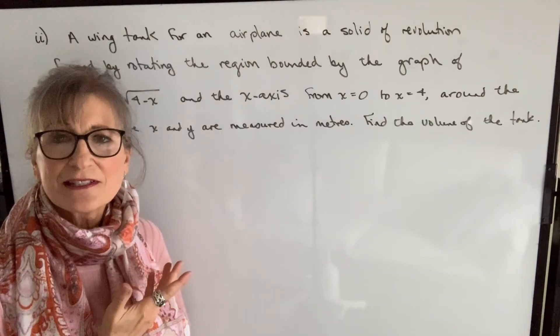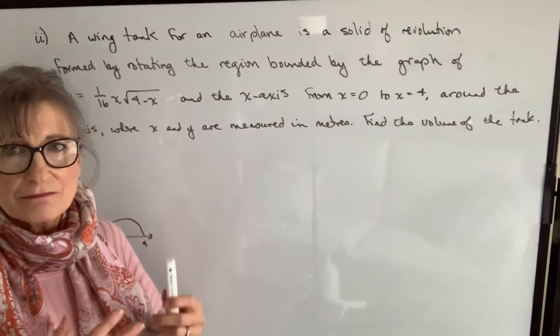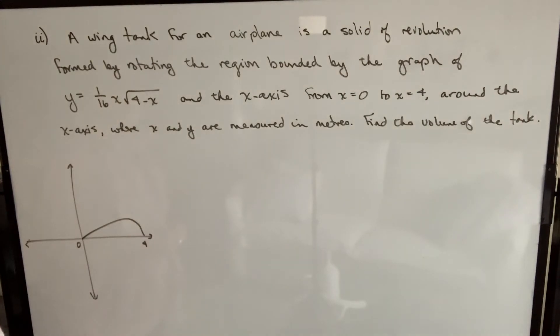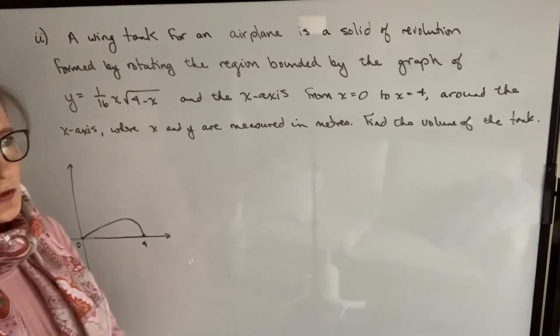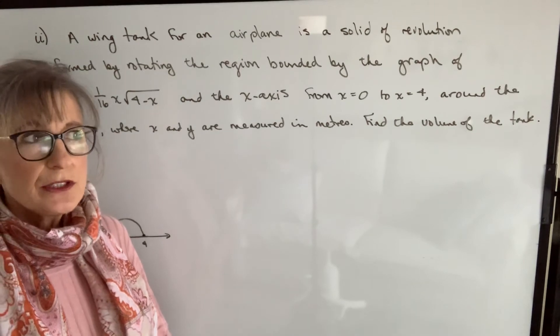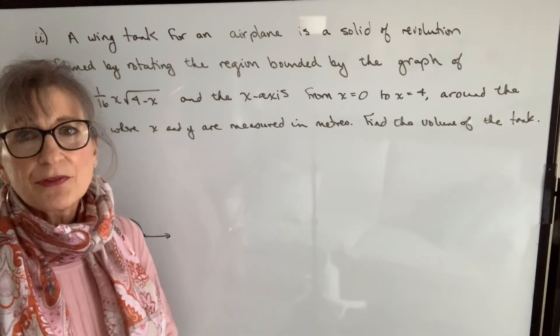I found this example and I thought it was a good one to illustrate applications of finding volumes. It says a wing tank for an airplane is a solid of revolution formed by rotating the region bounded by the graph of y equals 1/16th x times square root of 4 minus x and the x-axis from x equals 0 to x equals 4 around the x-axis, where x and y are measured in meters. Find the volume of the tank. This particular function doesn't fit into our basic curves that I talked about a few videos ago. So you're going to need to use some other method to figure out the graph.